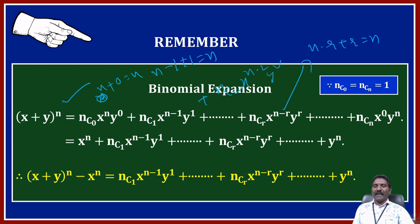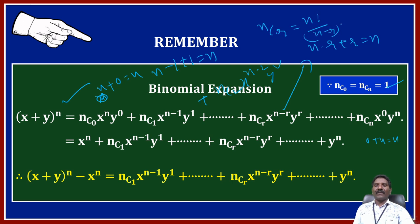Plus and so on, nCn · x^0 · y^n, so 0 plus n is n. We know that nC0 equals nCn equals 1, since nCr equals n factorial divided by (n minus r) factorial into r factorial. Taking r equal to 0, nC0 is n factorial by n factorial into 0 factorial, and since 0 factorial is 1, nC0 is 1 and nCn is also 1.